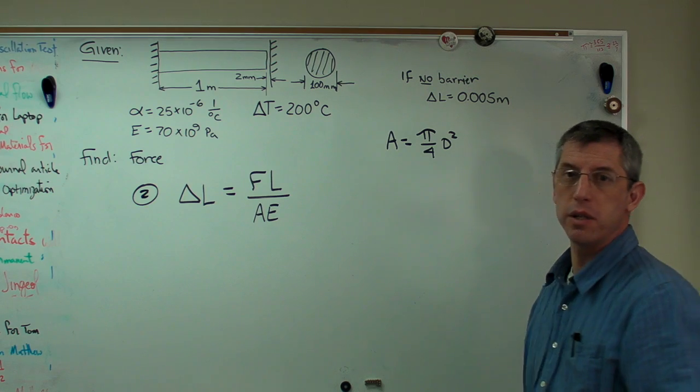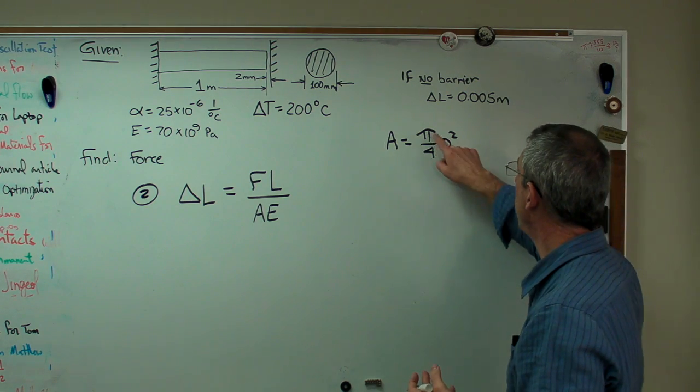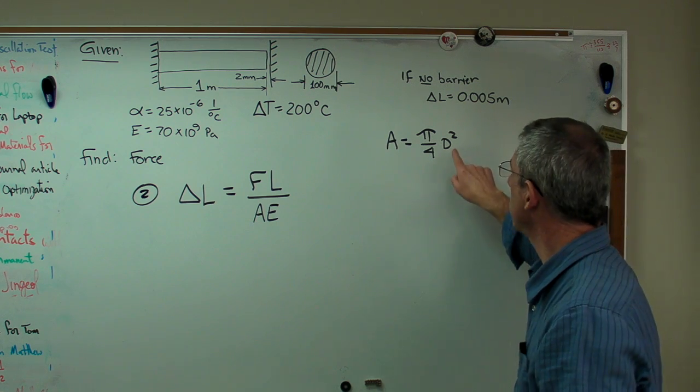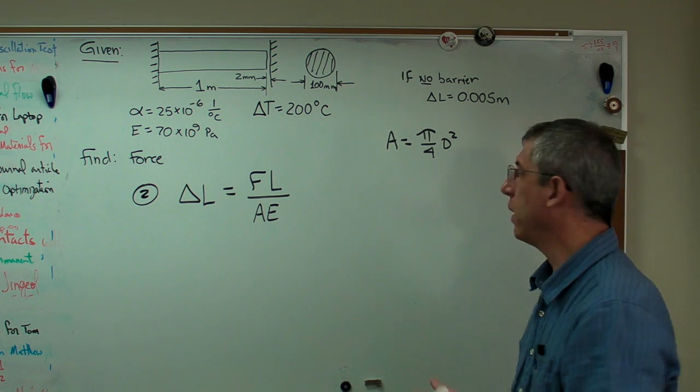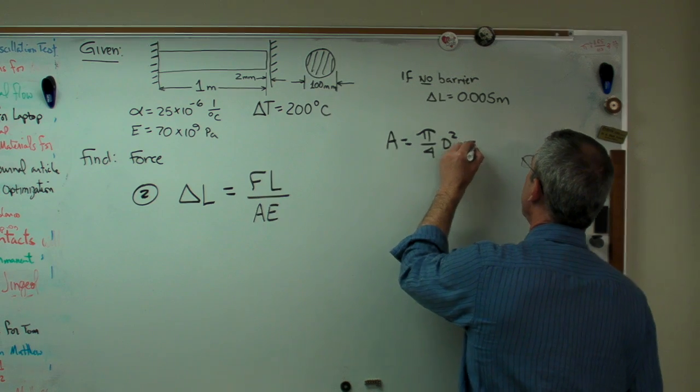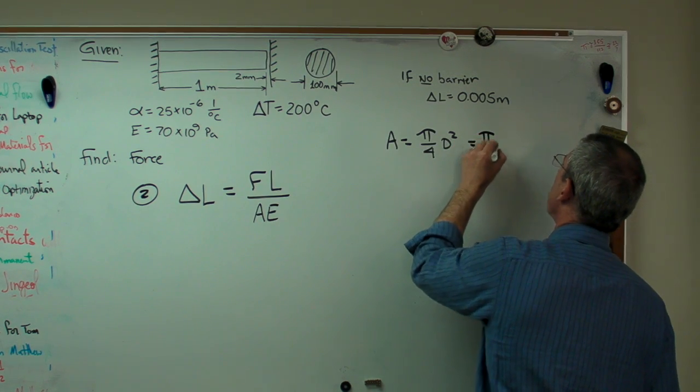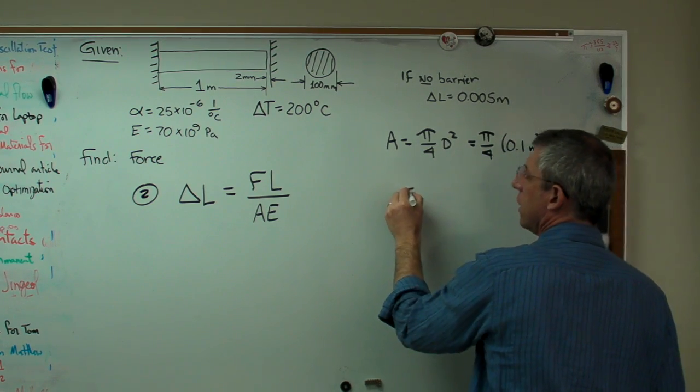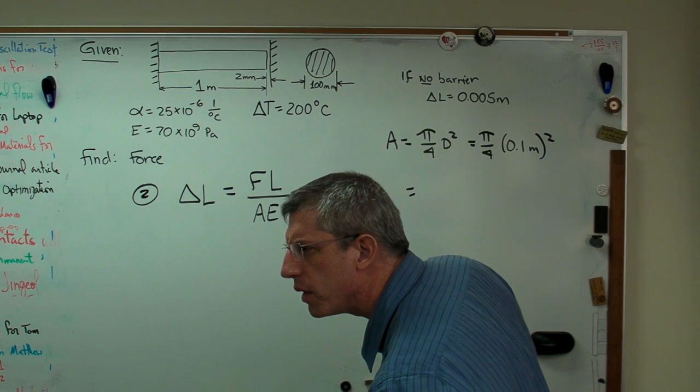Now, area is pi r squared. It's also pi d squared over 4. Since we're usually given dimensions in terms of diameter, it's convenient to figure out area that way. And that's pi over 4 times 0.1 meter squared. And I have to look at my cheat sheet over here.